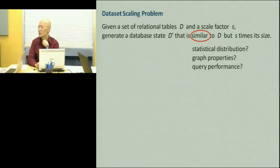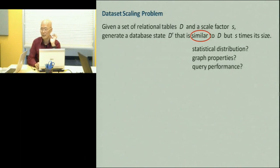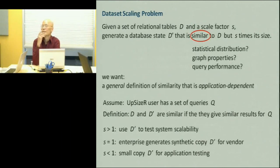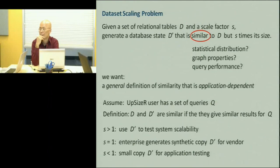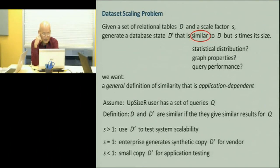You give me a set of relational tables and a scale factor S, and I will generate a synthetic version that is S times its size. The key thing is that the scaled-up version must be similar to the original version. Our idea for similarity is based on some set of queries that the Upsizer user has in mind, because we didn't think that measuring similarity by statistical distribution or graph properties is actually what we need. Although we started off, as the name suggests, thinking about upsizing — that means S bigger than 1.